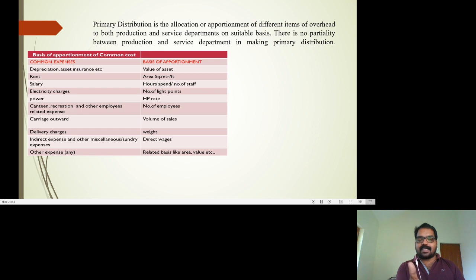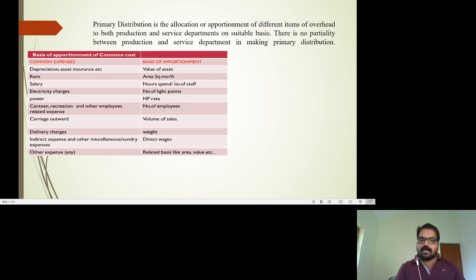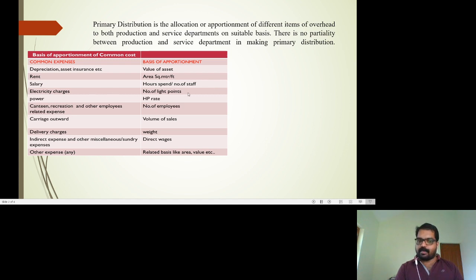If we use a common basis, we can use this ideal. Common expense is the basis of apportionment. Depreciation is based on the value of assets. We distribute rent based on areas occupied by each department. We distribute salary based on hours spent by employees, and supervision charges based on the number of staff. Electricity charge is based on the number of lighting points.